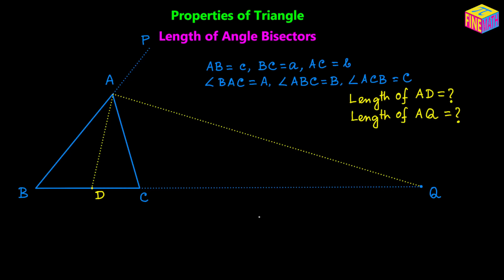Let's first focus on calculating the length of AD. As you can see in the diagram, we can write the area of triangle ABC as the sum of the two smaller areas: triangle ABD plus triangle ADC. So the sum of the areas of triangle ABD and triangle ADC equals the area of triangle ABC.